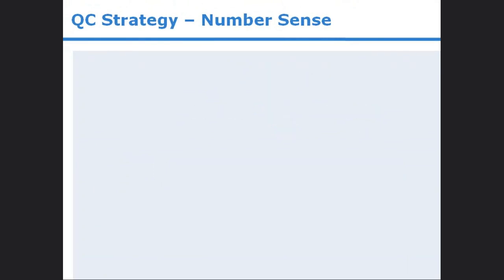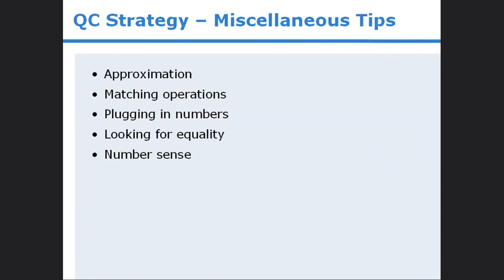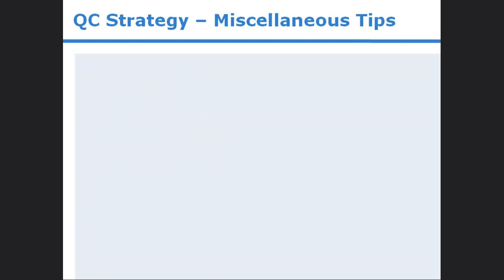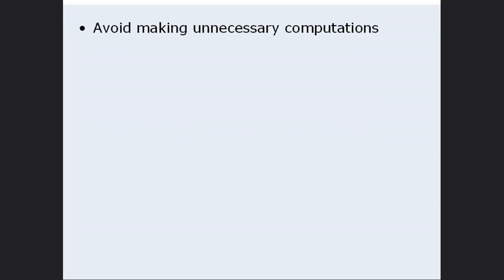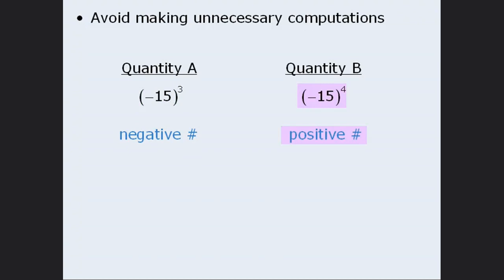Okay, that concludes this lesson. Let's summarize. In this lesson, we learned that some quantitative comparison questions can be solved quickly by applying a little bit of number sense. Up to this point in the module, we've examined several strategies for answering quantitative comparison questions. In this lesson, we'll examine a few more tips. The first tip is: avoid making unnecessary computations. Your only task in a quantitative comparison question is to determine the relationship between the two quantities. For example, in this question, we need only recognize that since we have a negative number raised to an odd power in quantity A, the result must be a negative number, and since we have a negative number raised to an even power in quantity B, the result must be a positive number. Since a positive number is always greater than a negative number, the correct answer is B.